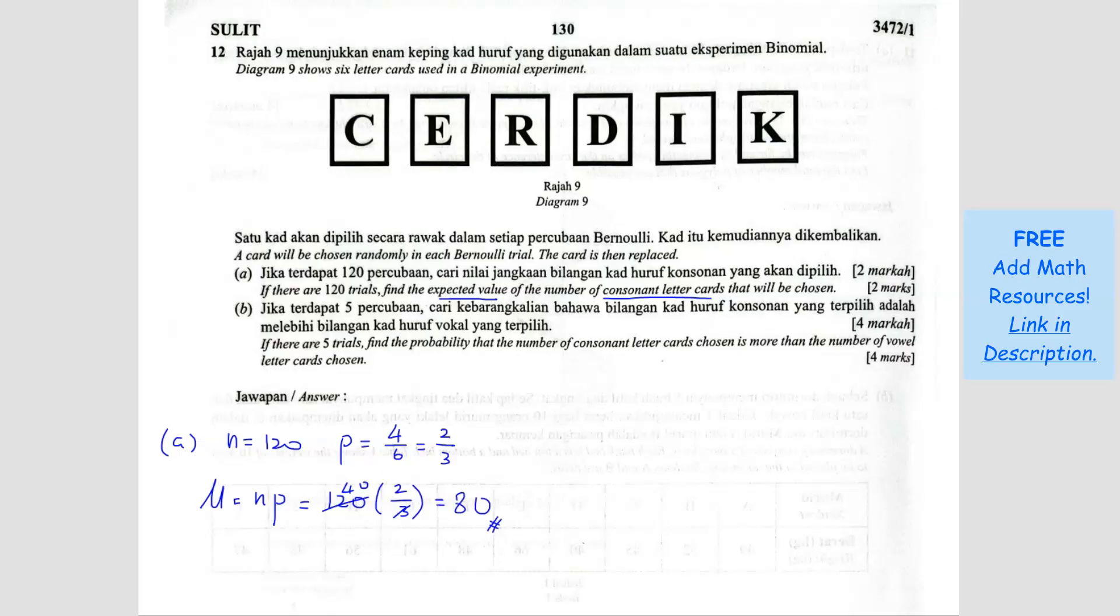So that's the mean, our expected value. Question B. If there are 5 trials, so now the N is 5.